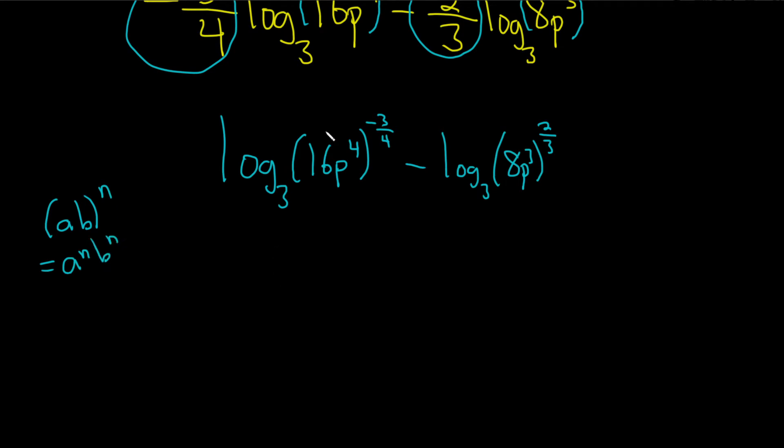That's the property of exponents rule that we use. So this is log base 3 of 16 to the negative three-fourths, and then it's going to be p to the 4 to the negative three-fourths. I'll go ahead and write it. I was going to skip a step, but I will resist.